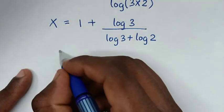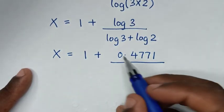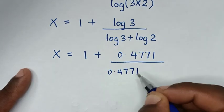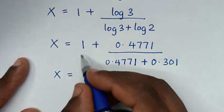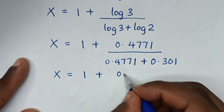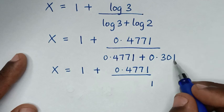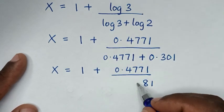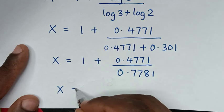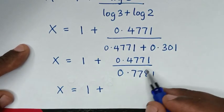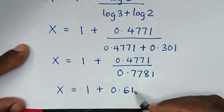Then, in the next step, it will be x is equal to 1 plus log of 3, which is 0.4771, over log of 3, which is 0.4771, plus log of 2, which is 0.301. Then it will be x is equal to 1 plus 0.4771, over the sum 0.7781. So x is equal to 1 plus 0.4771 divided by 0.7781, which gives 0.6132.